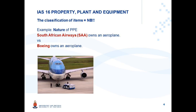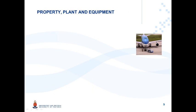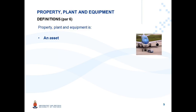Boeing would classify this airplane as inventories and would apply IAS 2 when accounting for it. Because the classification of an item is so important, the standards also assist users in classifying these items. What do we have available in IAS 16 to assist us with this classification process?